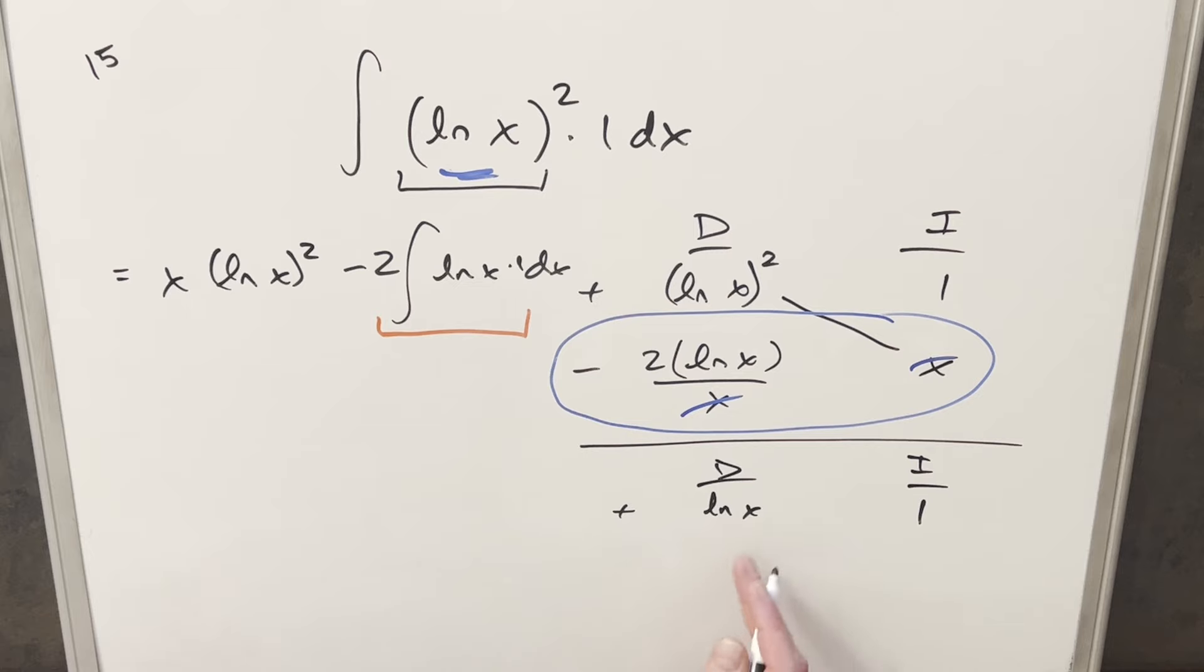And then we'll do this really quick. The derivative of ln x, again, is 1 over x. Integral of 1 is just x.